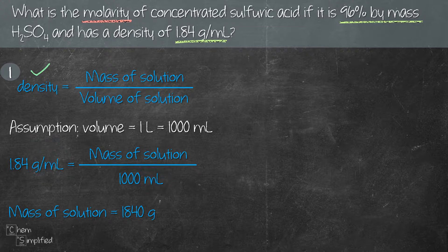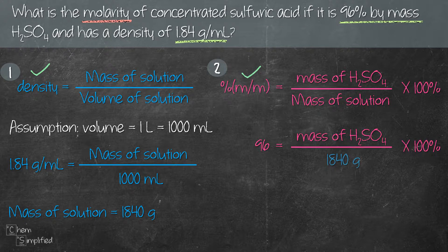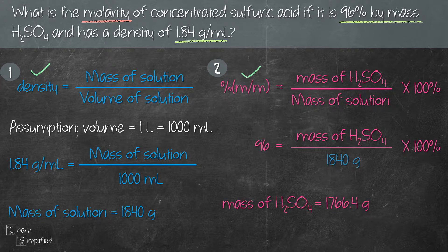Using the mass of solution we just found, let's plug it into the percent by mass formula. We have 96 equals the mass of H₂SO₄ divided by 1840 grams, times 100. That gives us 1766.4 grams for the mass of H₂SO₄.